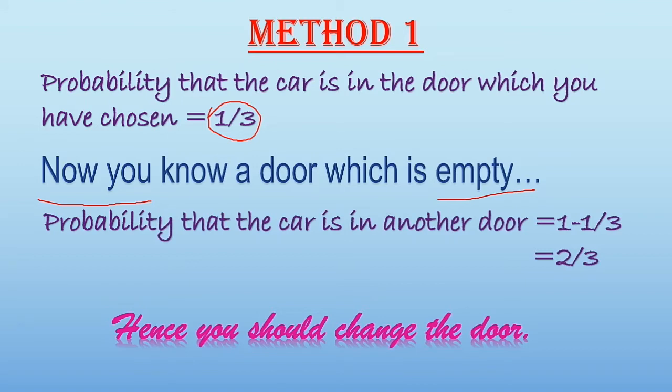If you change the door, the probability of the car being in the other door is one minus one by three, which equals two by three. So we are seeing that our probability when we change the door will increase, so we will change the door. And this is the solution of the question. Let's move to another solution.